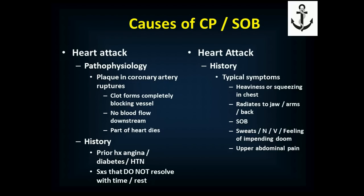The history is typically the same as angina since they're both coronary artery disease. The big difference is that symptoms don't resolve with time or rest. Typical symptoms are the same: heaviness or squeezing in the chest radiating to jaw, arms, or back; shortness of breath; sweating; nausea; vomiting; feeling of impending doom; and possibly upper abdominal pain. Again, that's more common in diabetics and women but can be the presenting symptom in any patient.